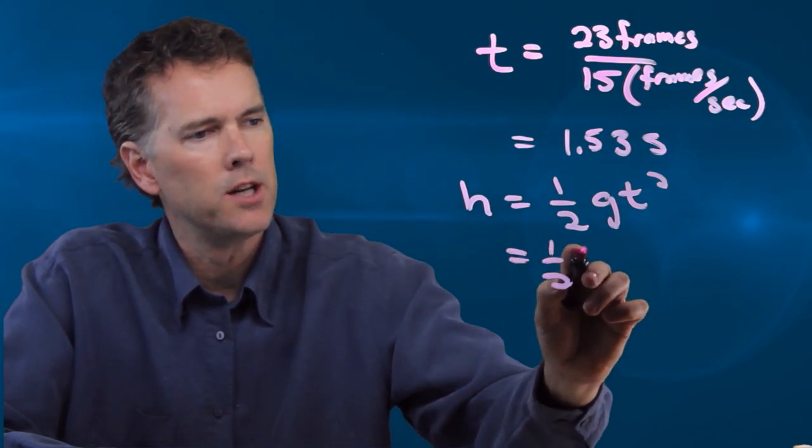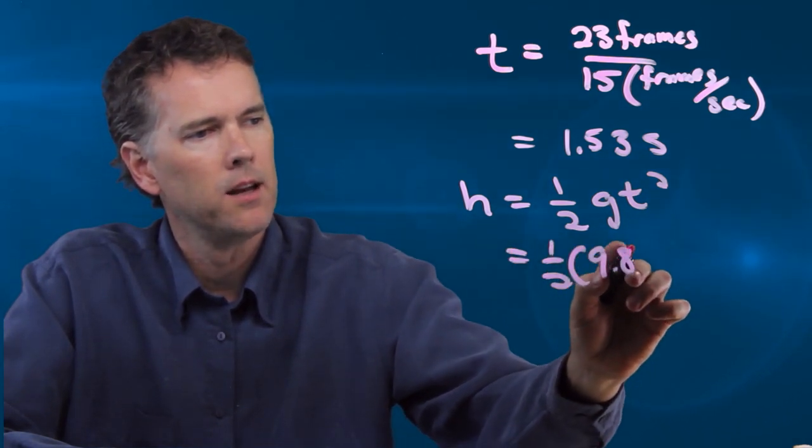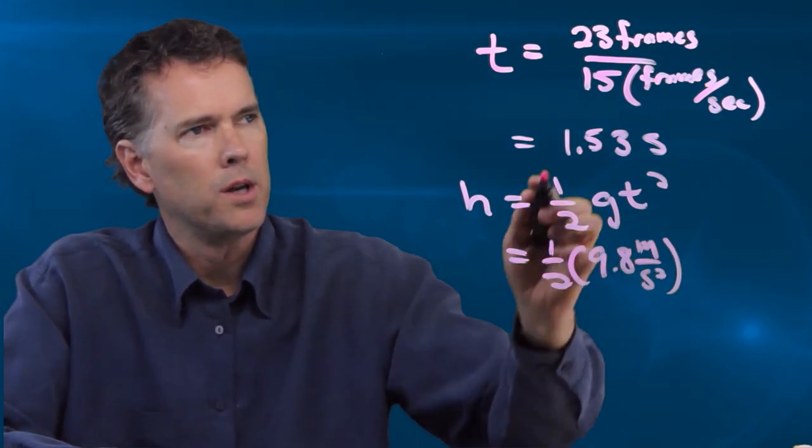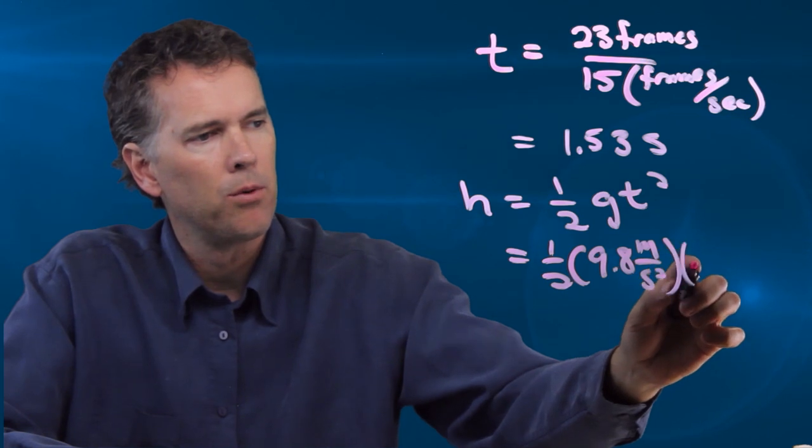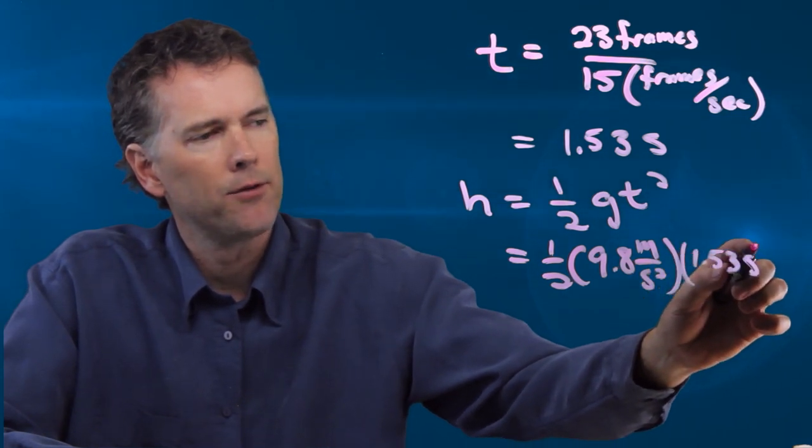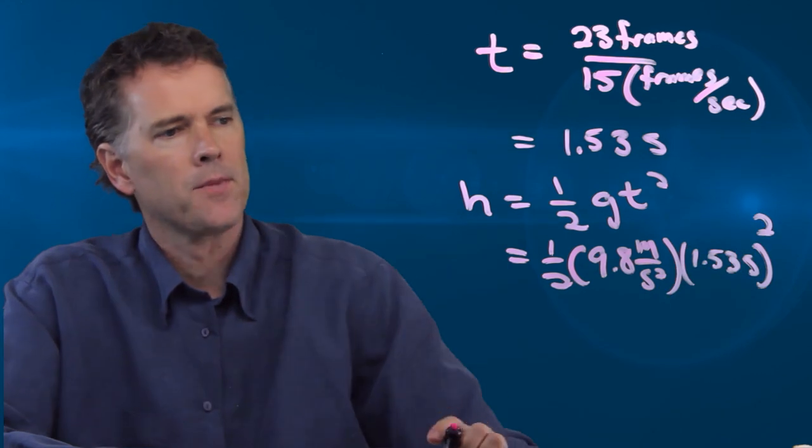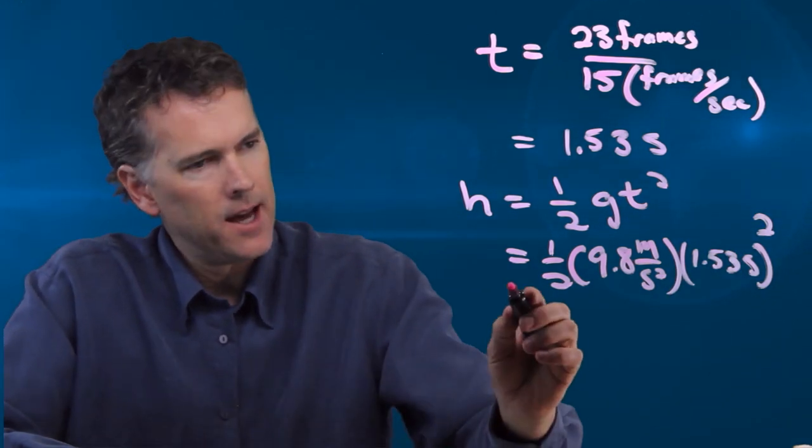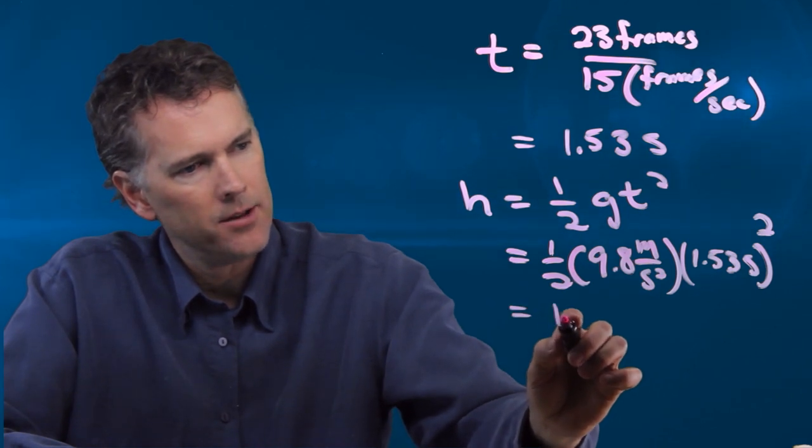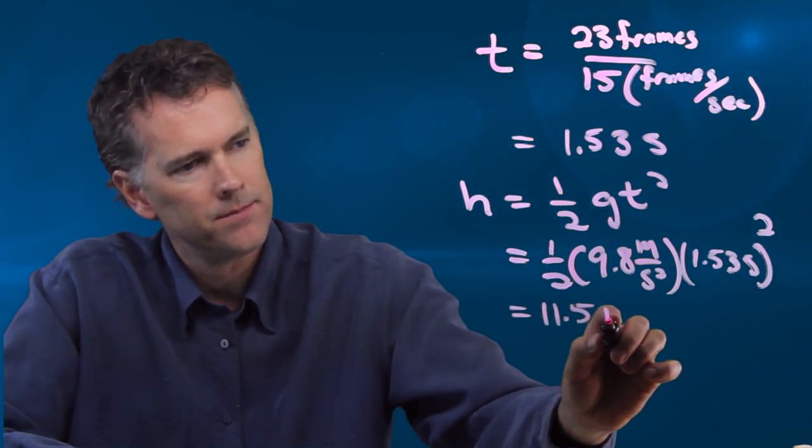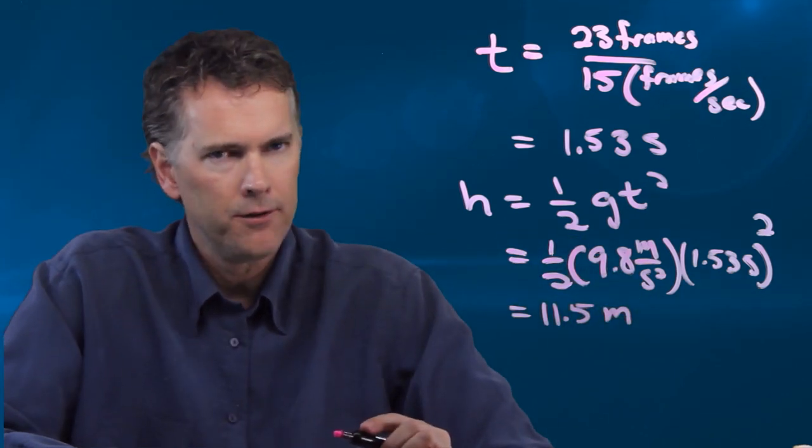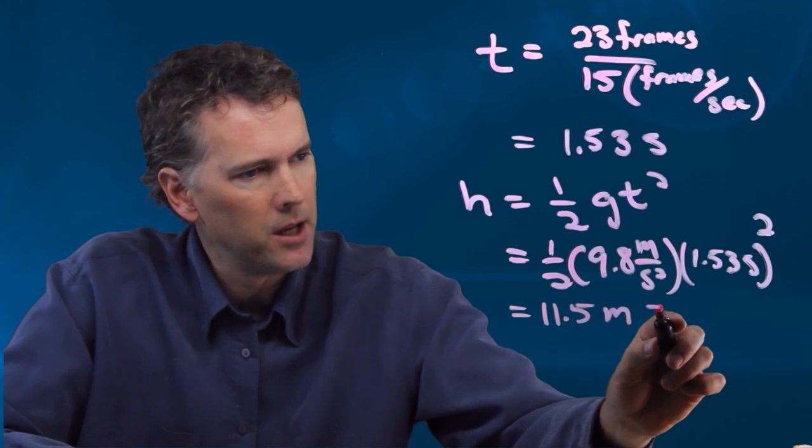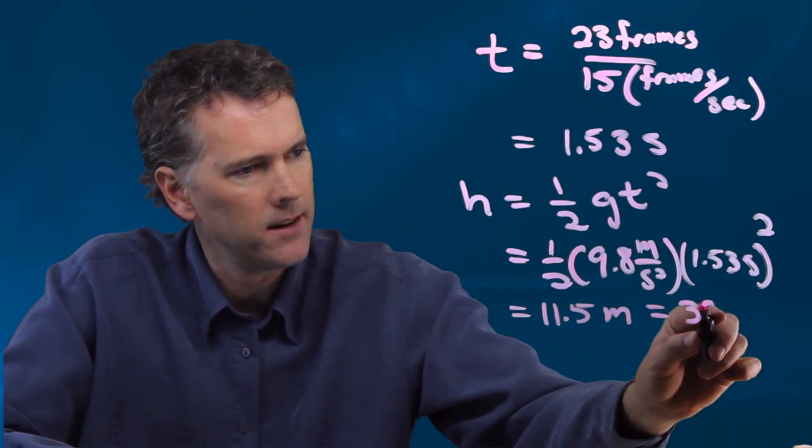Okay, but we know what g is. It's 9.8 meters per second squared. We know what t is now. It's 1.53 seconds. And we have to remember that we're squaring it. And if you run those numbers in your calculator, you should get 11.5 meters. And if you look up the conversion for meters to feet, this works out to be 38 feet.